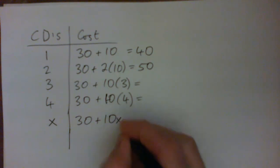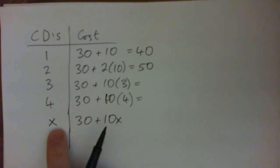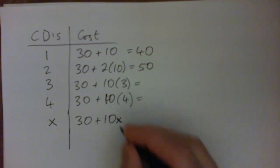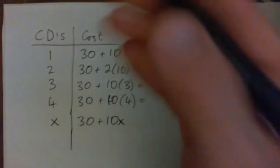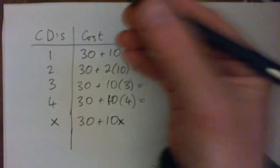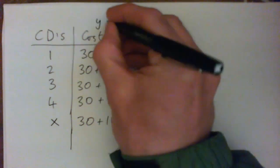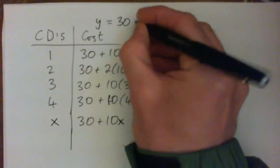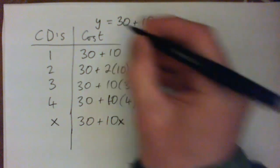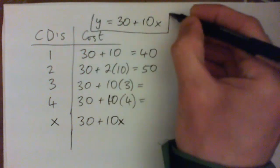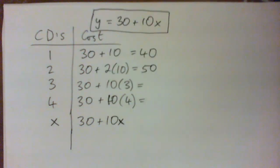So $30 plus $10X, or $10X plus $30, or whatever. You guys don't have to use X. You could use N or C or any letter you want. But yeah, so our formula could look something like this: Y equals $30 plus $10X. And you don't have to use X and Y. You can use any letters you want on that.